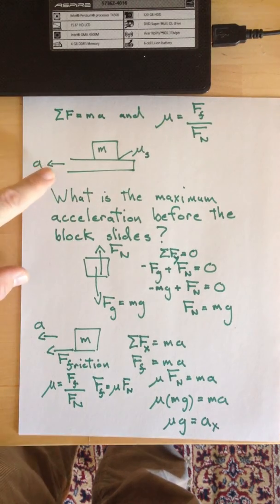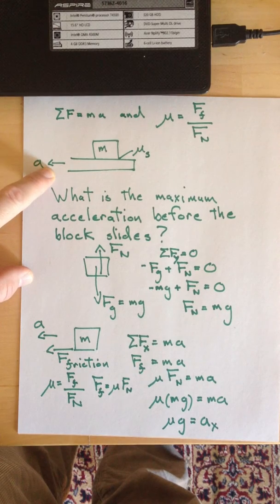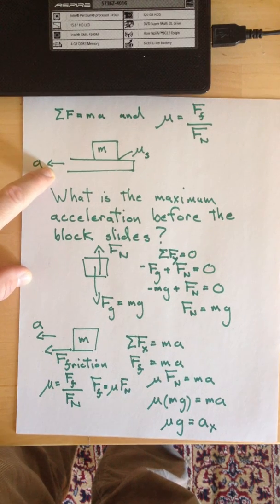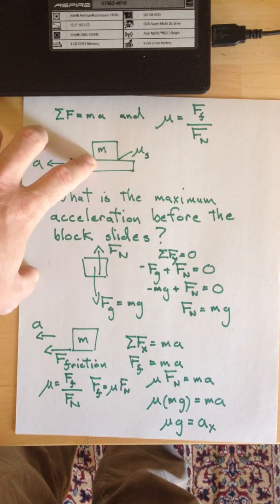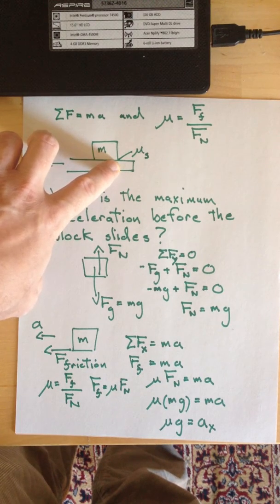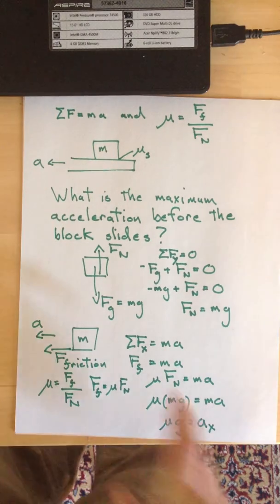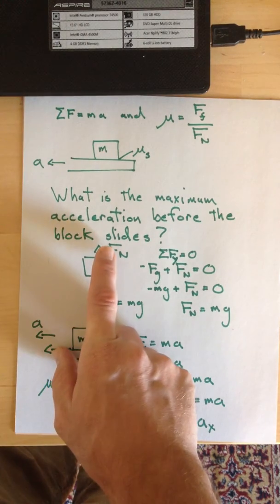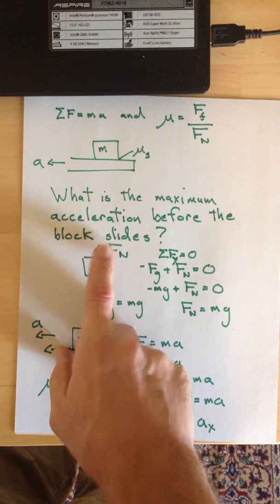So the problem asks, what's the maximum acceleration this board or surface can have before the mass slips, given this coefficient of static friction between the board and the mass? So there's our question again. What's the maximum horizontal acceleration before the block slides?